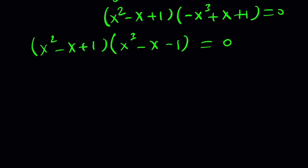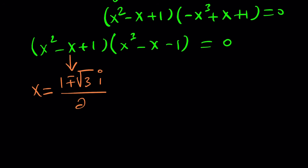The quadratic factor x squared minus x plus one is easy — it's quadratic. So let's go ahead and solve it. Using the quadratic formula: negative b plus or minus the square root of b squared minus four ac. That gives one minus four, which is negative three under the square root — that's a complex or imaginary number — so we can write the solutions using i.